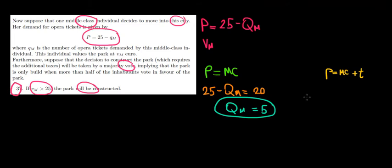and the tax would be five euros per ticket. So the price of 25 minus the quantity demanded by the middle class person would be equal to 20 plus five, which is 25. In other words, there would be no demand. So the quantity in this case would be equal to zero.